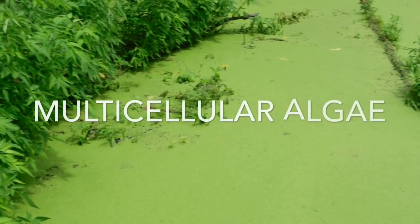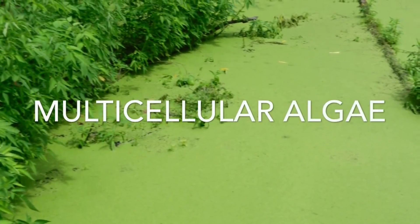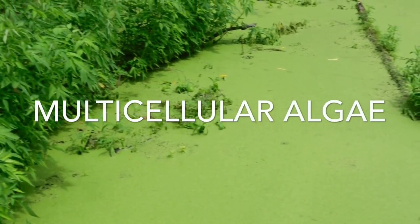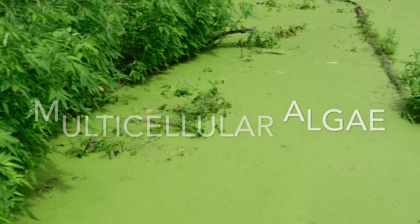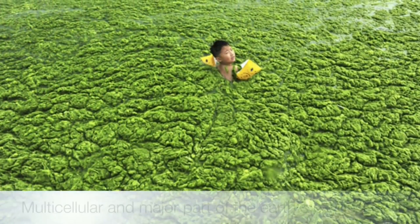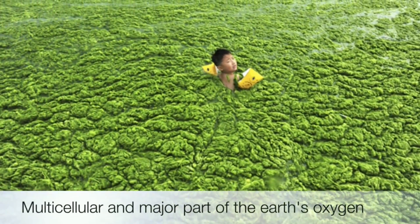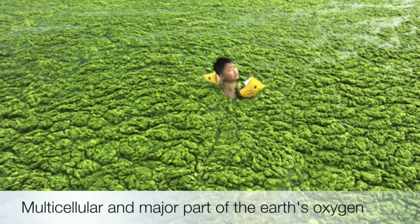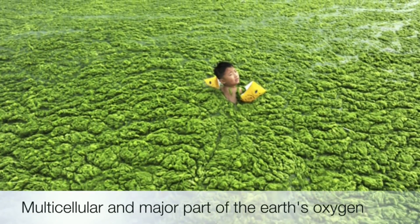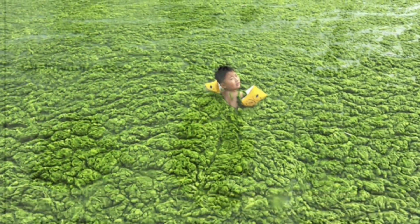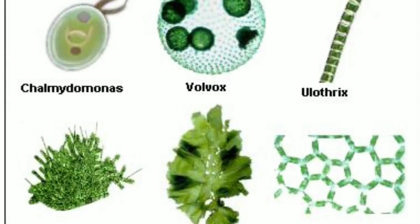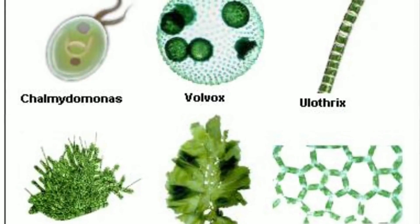Multicellular algae are aquatic in nature. They are the major producer of Earth's oxygen. There are many examples like Chlamydomonas, Volvox, Ulothrix, etc.